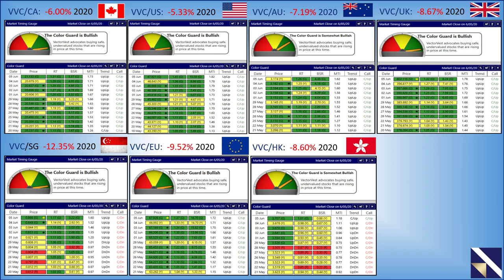Joseph asks: why does Hong Kong have a confirmed up call when the buy-sell ratio is below one? In most countries the buy-sell ratio is not part of the confirmed call rules. It's based on the 65-day moving average — price needs to get above it, the VectorVest composite needs to be higher week over week for two consecutive weeks, and higher than the previous day. Those rules apply to all countries except the US and Europe, which use the buy-sell ratio needing to get above one.